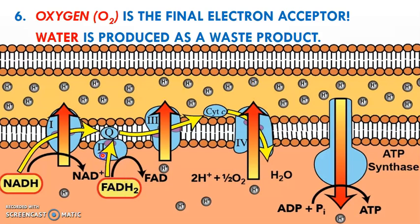The FADH2s, once they donate their electrons into the chain, skip this first step. So the electrons from FADH2 will only have two opportunities as they move down the ETC to pull hydrogen ions up into the intermembrane space. When these electrons get to the end of the chain, something has to be there to accept them — if nothing is there, those electrons could interact with mitochondrial membrane components and possibly destroy or significantly damage it. So the mitochondria uses oxygen here.